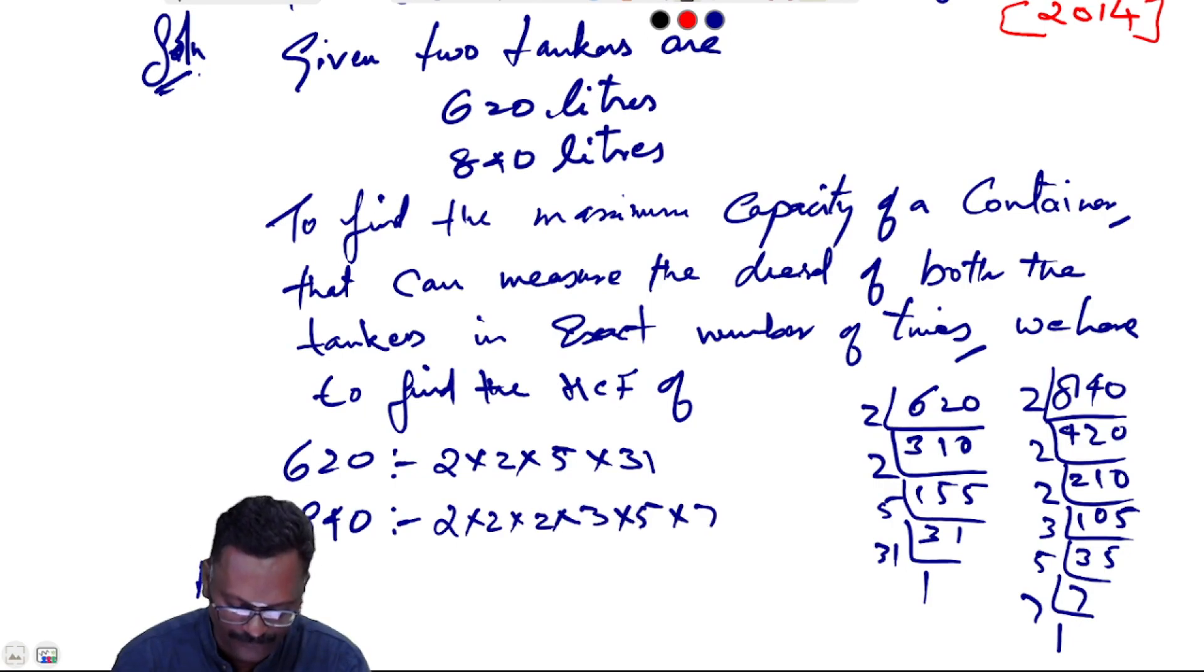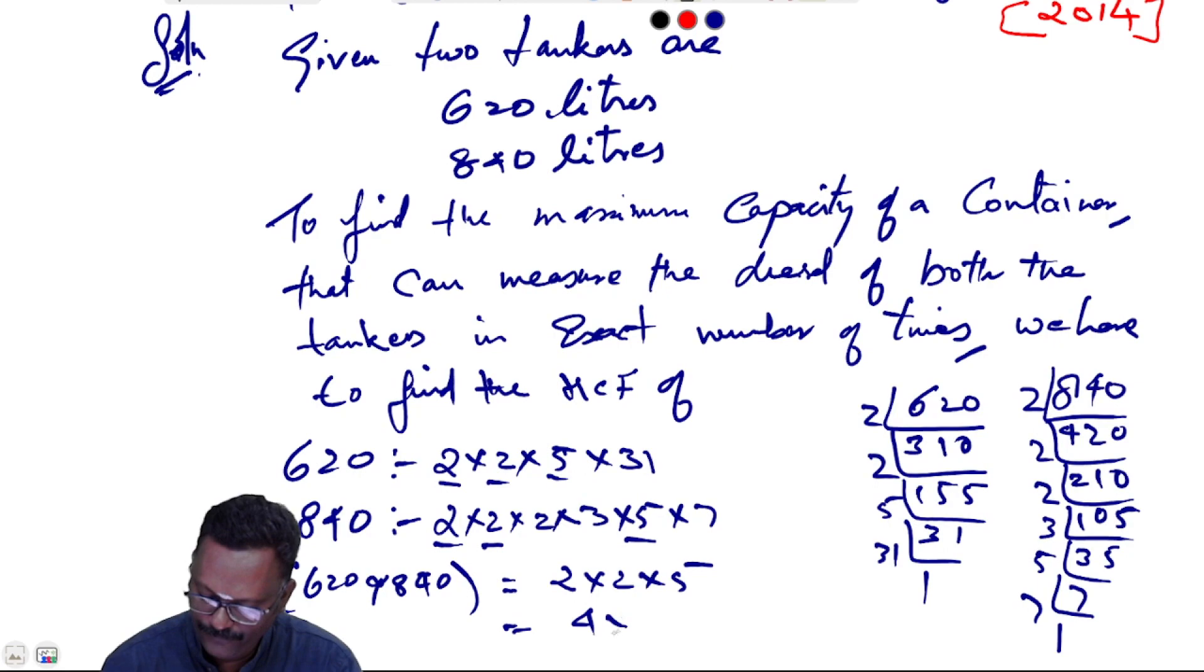HCF of 620 and 840: It is equal to 2 into 2 into 5, which is 4 into 5, that equals 20 liters.